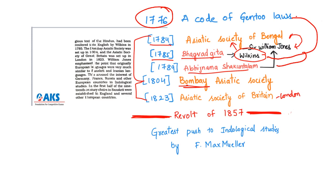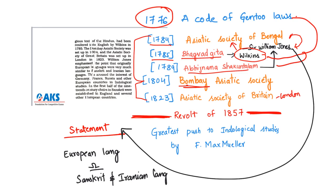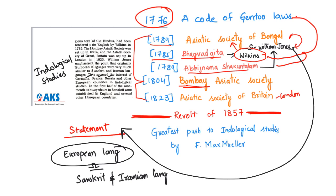During this translation work, Sir William Jones — a civil servant in the East India Company — made a notable statement that European languages were very similar to Sanskrit and Iranian languages. This aroused interest across almost all European countries — Germany, France, Russia, and others — in Indological studies, which referred to examining how Indian languages are similar to European languages.